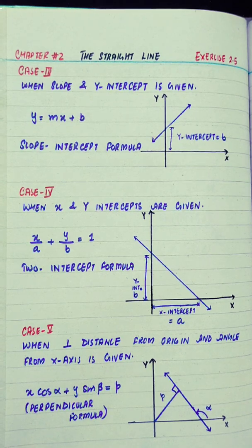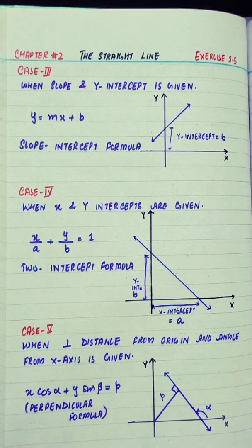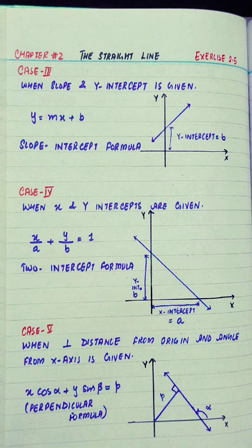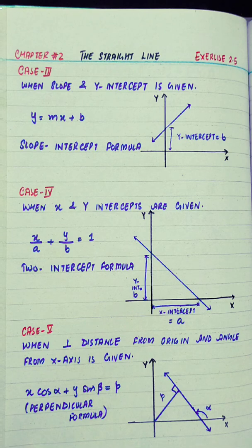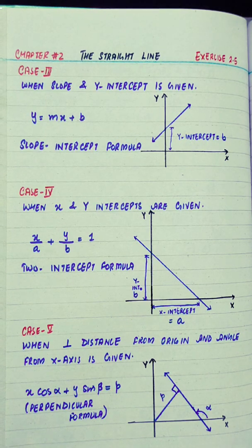Case 5 is when the perpendicular distance from the origin and angle from the x-axis is given, then we use x cos alpha plus y sin alpha equals p. This formula is also known as the perpendicular formula.